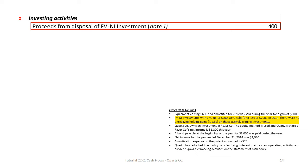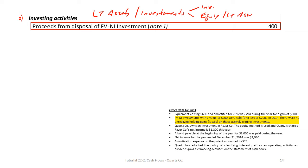The investing section comes next, or alternatively the financing section can be second — order doesn't matter as long as operating comes first. In investing, we look at long-term assets and investments: bonds, equities, equipment, and other long-term assets. Fair-value-through-net-income investments with a carrying value of $600 were sold for a loss of $200.